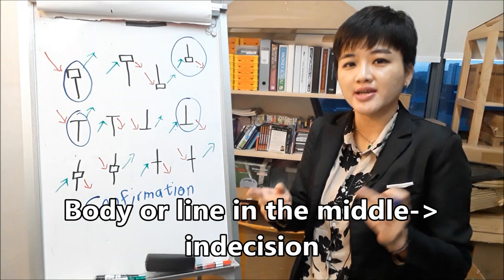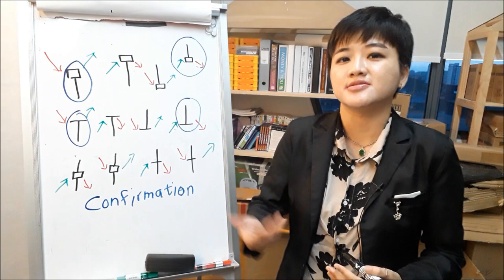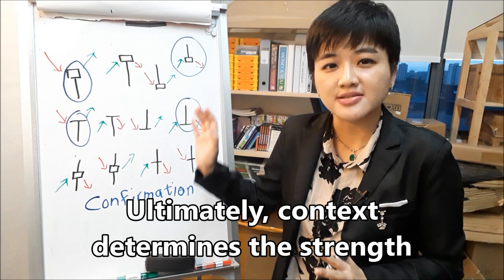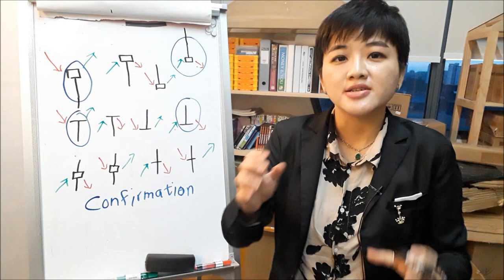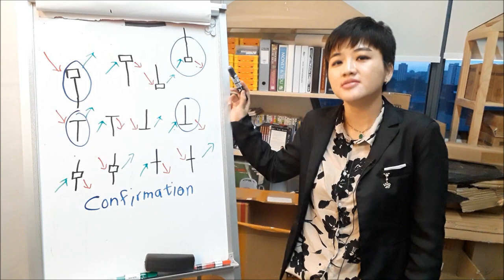Another thing that causes a candle to increase in strength is the context. But if we just look at the candlestick itself, what will cause the strength to increase? The longer the lower shadow or the upper shadow, the stronger it will be. For all of these patterns, the longer the shadow, the stronger is the signal.